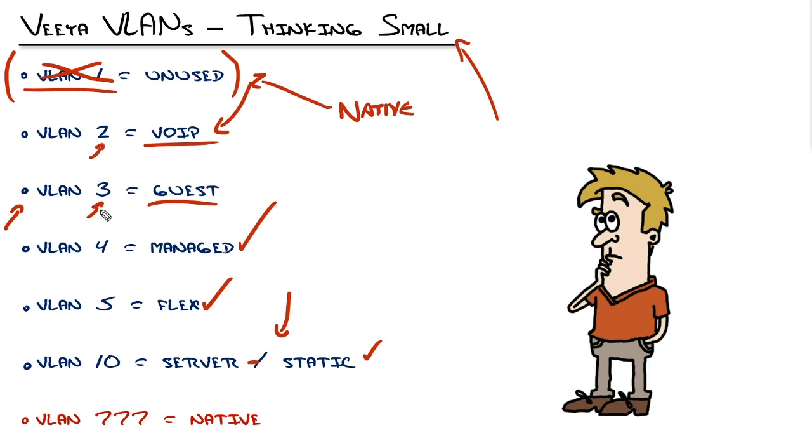First VLAN will be VLAN 2, we'll make that voice over IP. Next one, VLAN 3 will be the guest. Next one, VLAN 4 will be managed. And this isn't a bad approach.